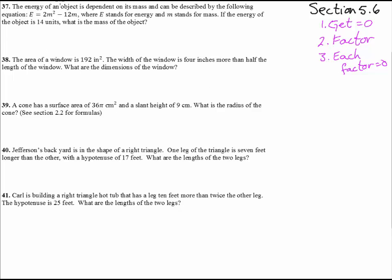Alright, so let's try it. Number 37, the energy of an object is dependent on its mass and can be described by the following equation. So there's energy equals 2 mass squared minus 12m. E stands for energy, m stands for mass. If the energy is 14, so 14 is going to go right in there. So we have 14 equals 2m squared minus 12m. What's the mass of the object? So here we have an equation that has been created for us.